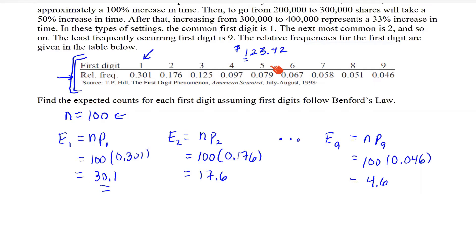On the homework, there will be different distributions you might encounter. For example, the textbook has an example about the income distribution of household income — comparing today's distribution to income distribution back in 2000 to see if it has changed. Another example involves the distribution of population throughout the US, such as whether people are moving from the Midwest to the South. You always have an existing distribution and compare what you'd expect to what you're actually observing.